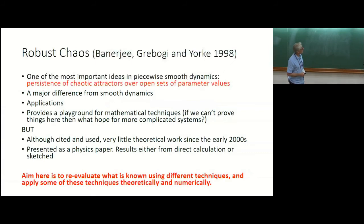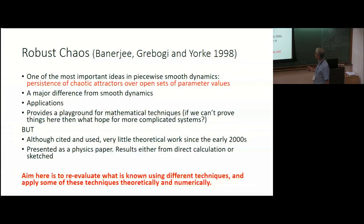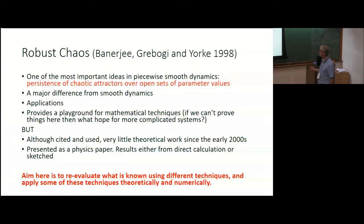So I'll try to present some flavor of the problems I've been trying to address, which actually go back to a seminal paper by Sumitro. The basic idea of robust chaos was a paper by Sumitro, Selser-Groberti, and Jim Yorke in 1998. And it's become one of the most important ideas in piecewise smooth dynamics, partly because it's a very good indication of how piecewise smooth dynamics differs from smooth dynamics.